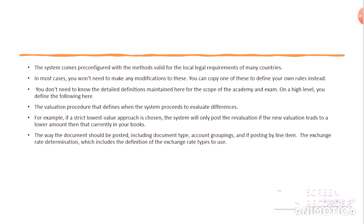You don't need to know the detailed definitions for the scope of the academy and exam. On a high level you define the following: the valuation procedure, which defines when the system proceeds to evaluate differences. For example, if a strict lowest value approach is chosen, the system will only post the revaluation if the new valuation leads to a lower amount than currently in your books. You also define the way the document should be posted, including document type, account groups, groupings, and exchange rate determination.